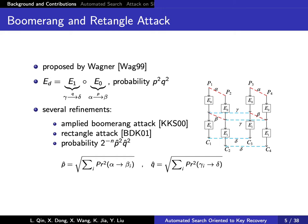It can be converted into a chosen-plaintext attack, known as the amplified boomerang attack or rectangle attack. In the rectangle attack, considering multiple differentials whose alpha and delta are fixed, and the internal differences beta and gamma are arbitrary values. The probability of the rectangle attack is 2^(-n) * p^2 * q^2.